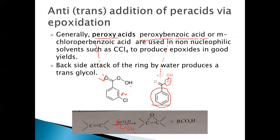R represents the whole group — either peroxybenzoic acid or meta-chloroperoxybenzoic acid — and in the presence of CCl4 the alkene is converted into the glycol. This is observed in good yields.